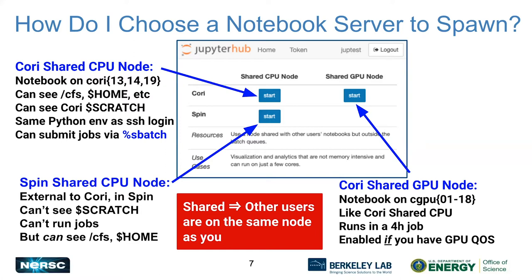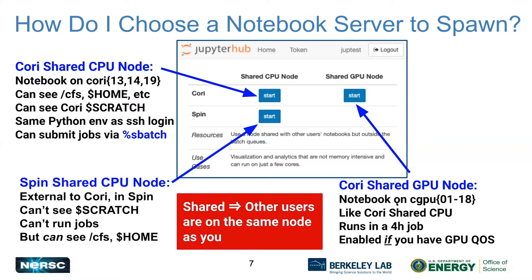If you have data in those file systems and need to make a plot because your paper deadline is tomorrow, you can use the Spin shared CPU node. The GPU node option, if you can see it — not everybody can — launches a notebook in batch, it doesn't get charged, but you can only run for up to four hours before it turns off.